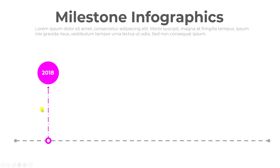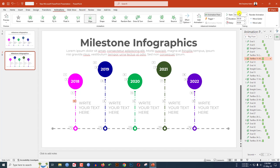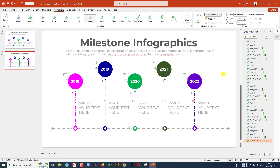There is an error — I have to make the text boxes After Previous. Go to the animation pane and make each text box After Previous. All the text boxes across each timeline node should also be set to After Previous. Now let me watch the slideshow again.